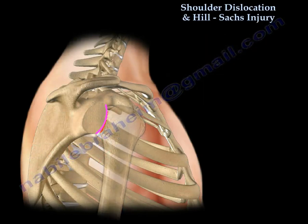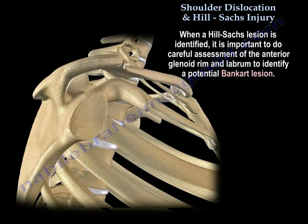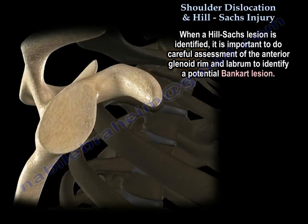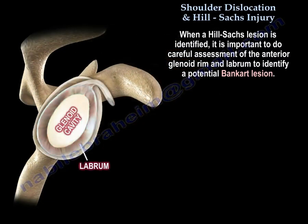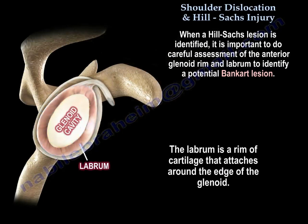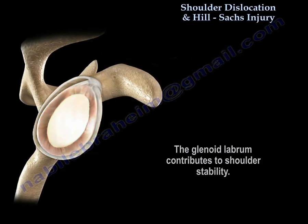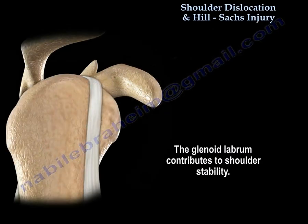When a Hill-Sachs lesion is identified, it's important to search for anterior glenoid rim and labrum pathology to identify a potential Bankart lesion. The labrum is a rim of cartilage that attaches around the edges of the glenoid, and this glenoid labrum contributes to shoulder stability.